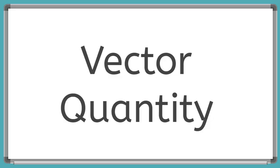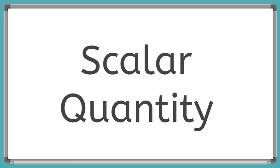A vector quantity is something that has magnitude, like the amount of or how much of something there is, and the direction. If something only has a magnitude, we call it a scalar quantity.